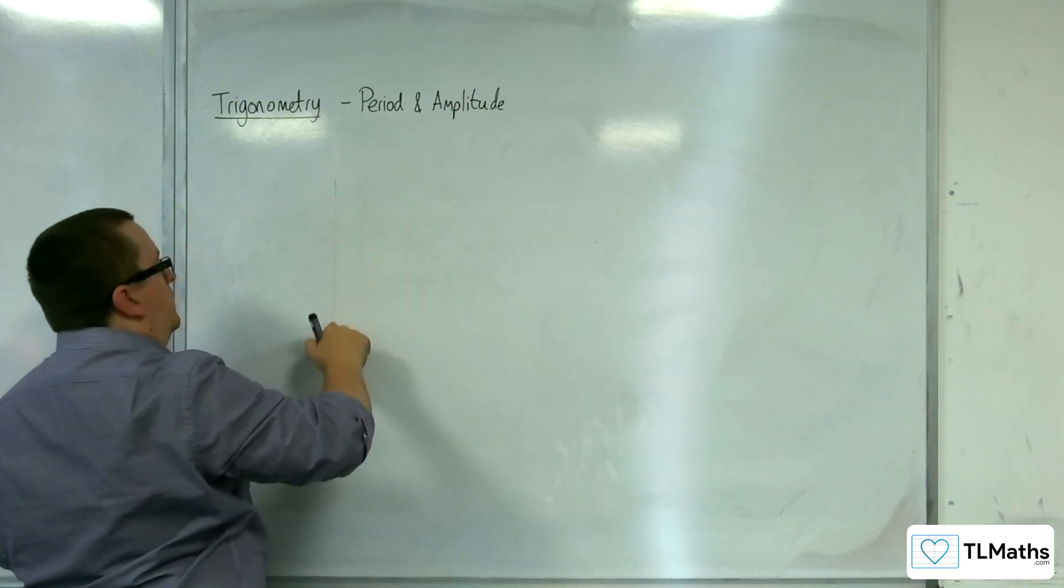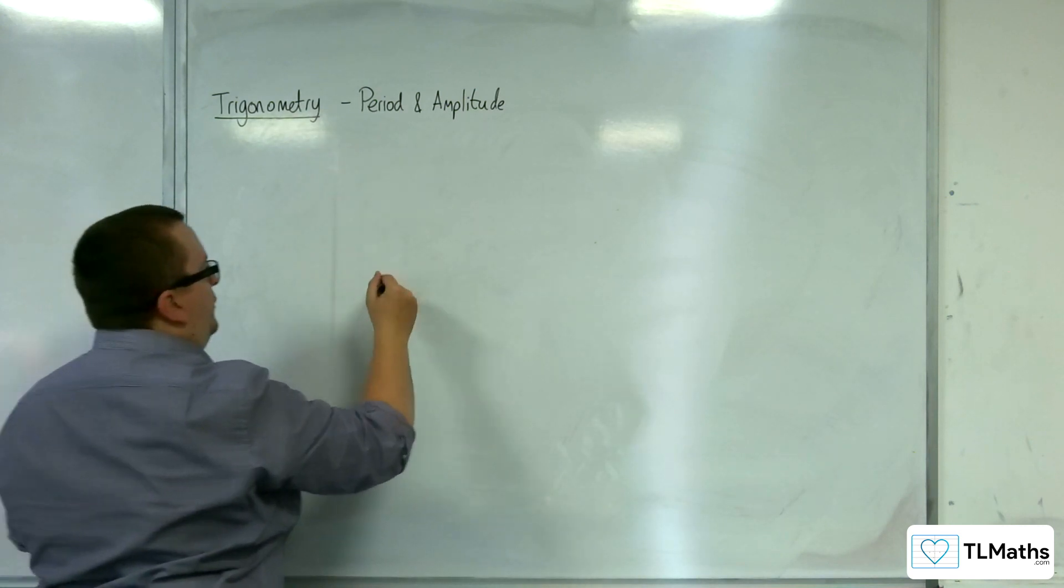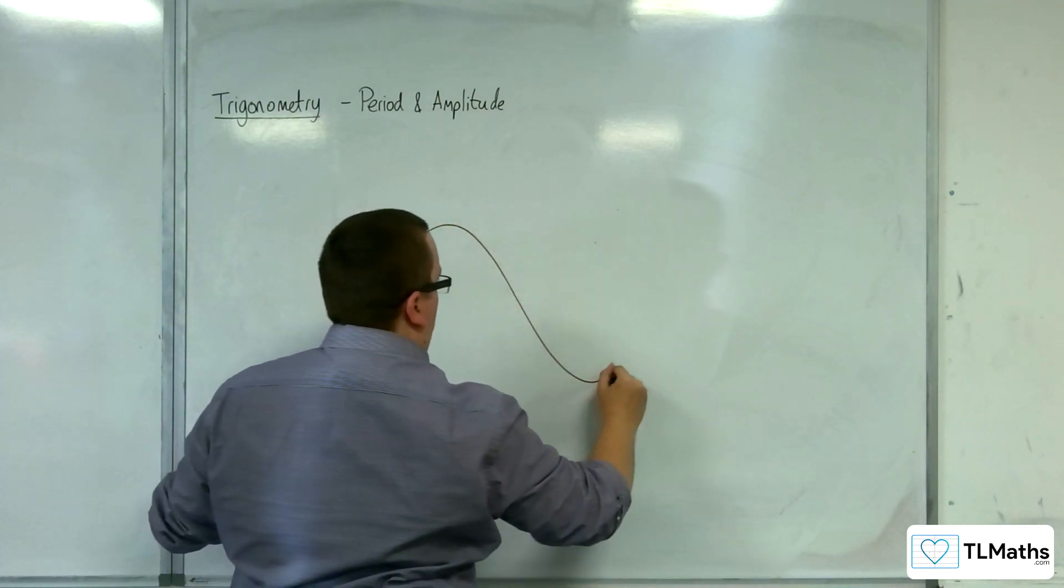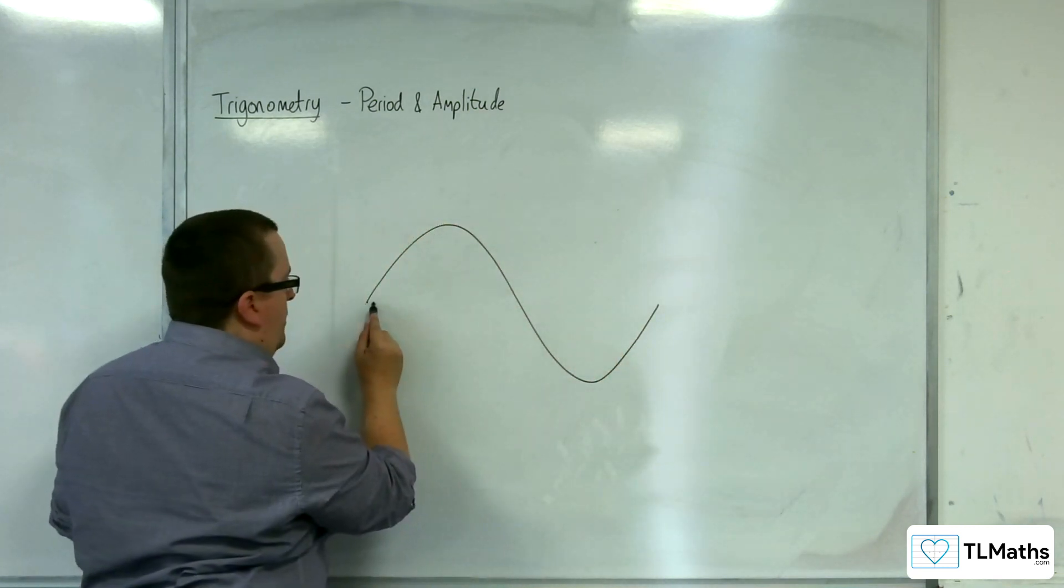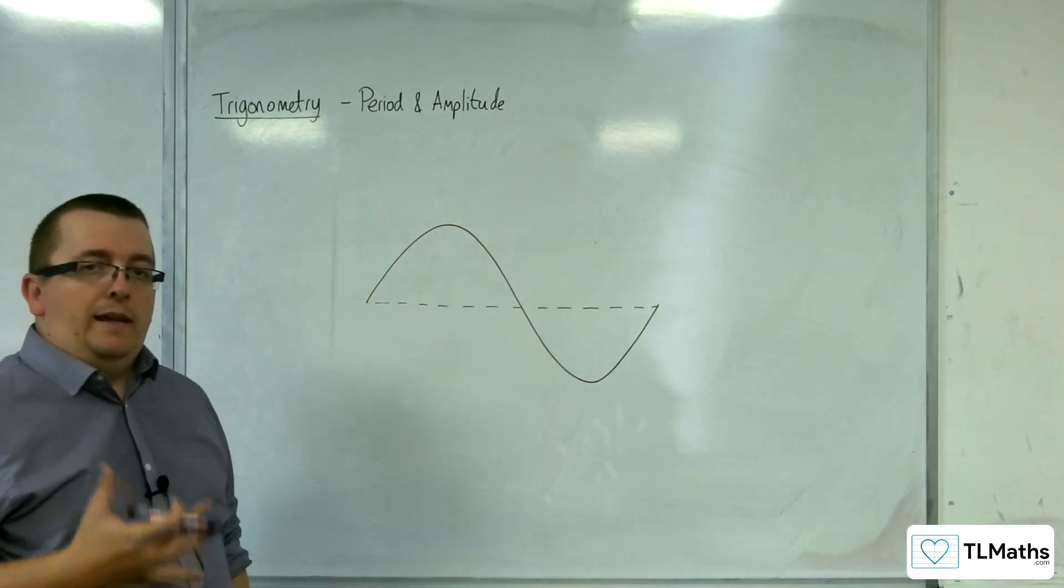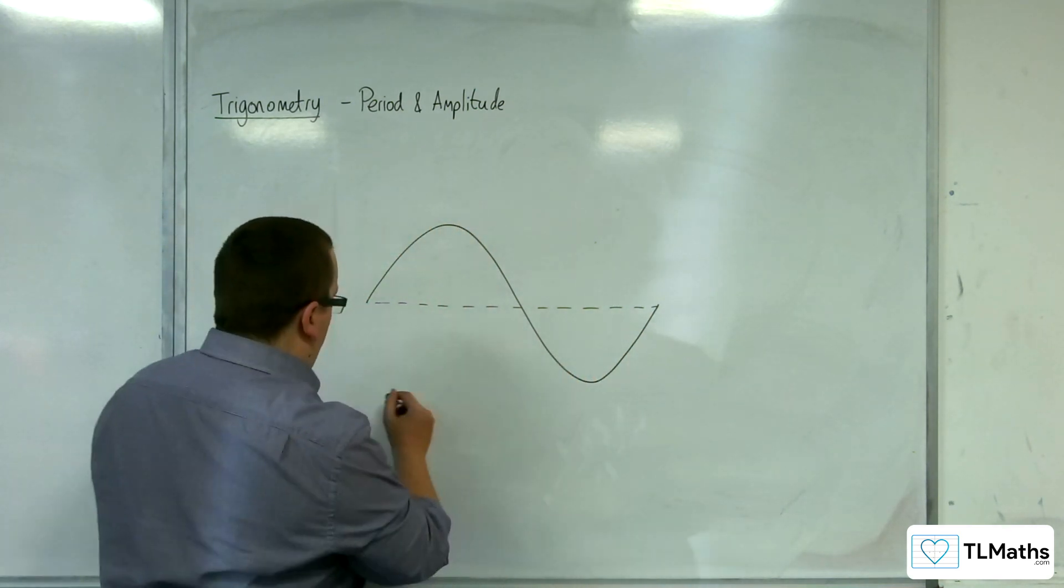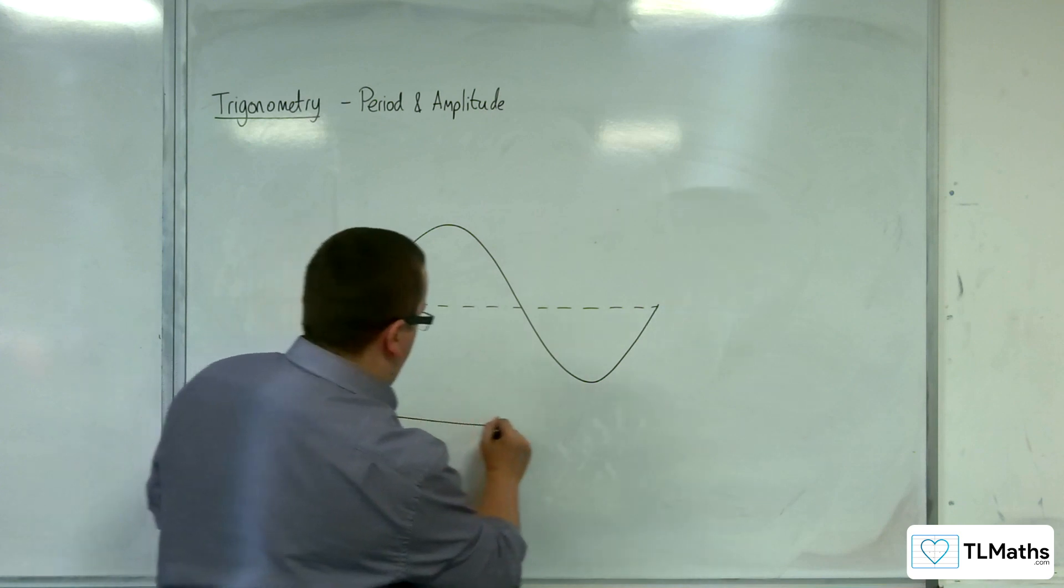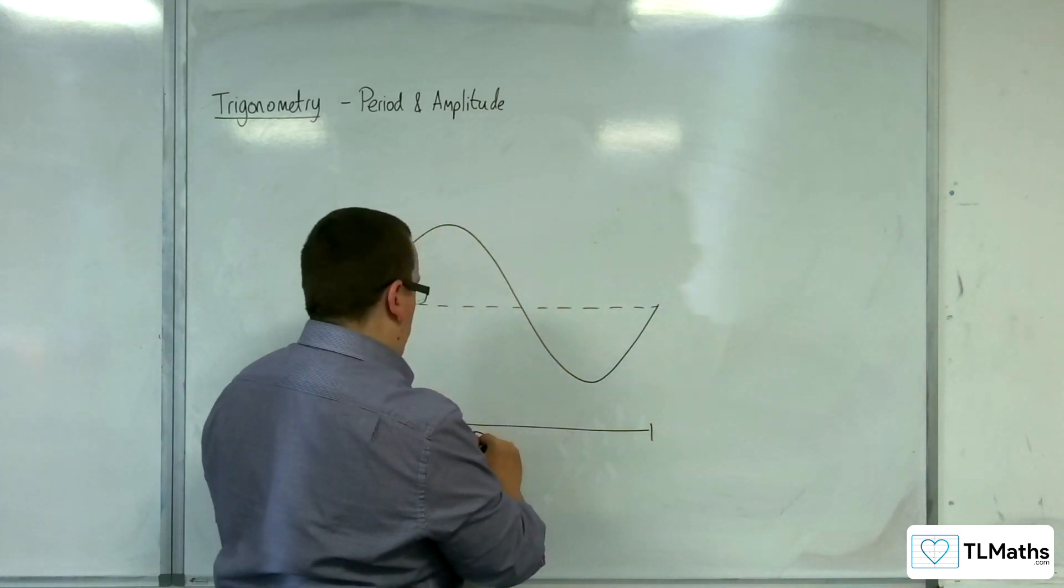let's just do it as a bog standard. Here is a curve. Then this distance here over which it repeats itself is the period. So that distance there is the period of the function.